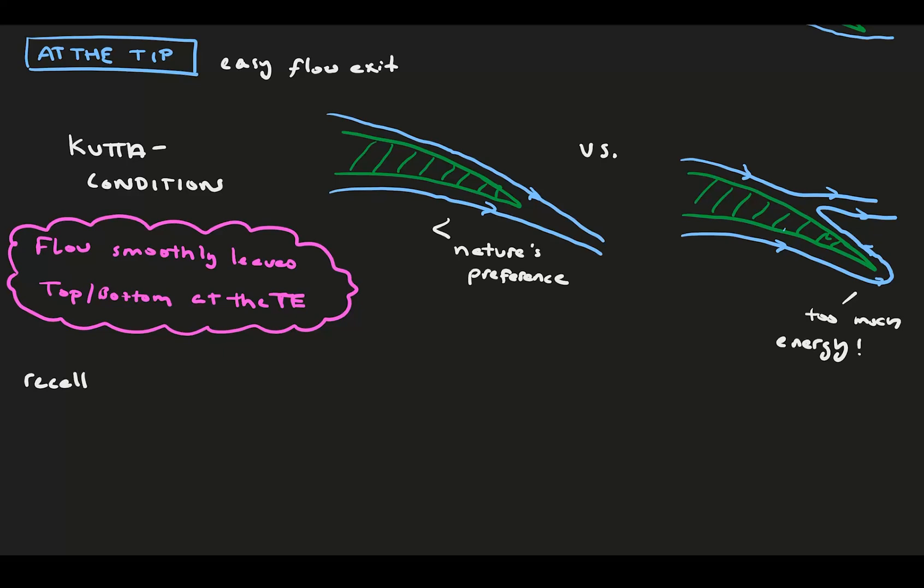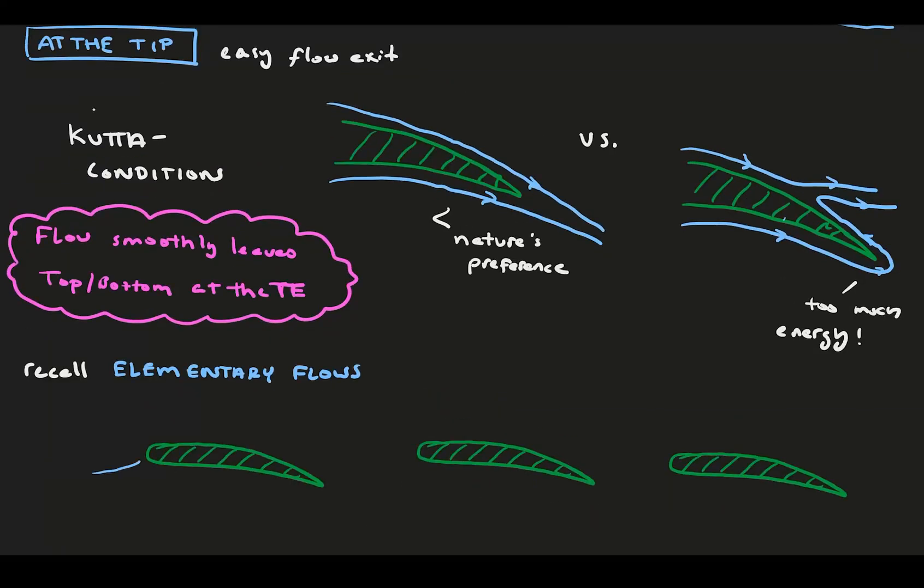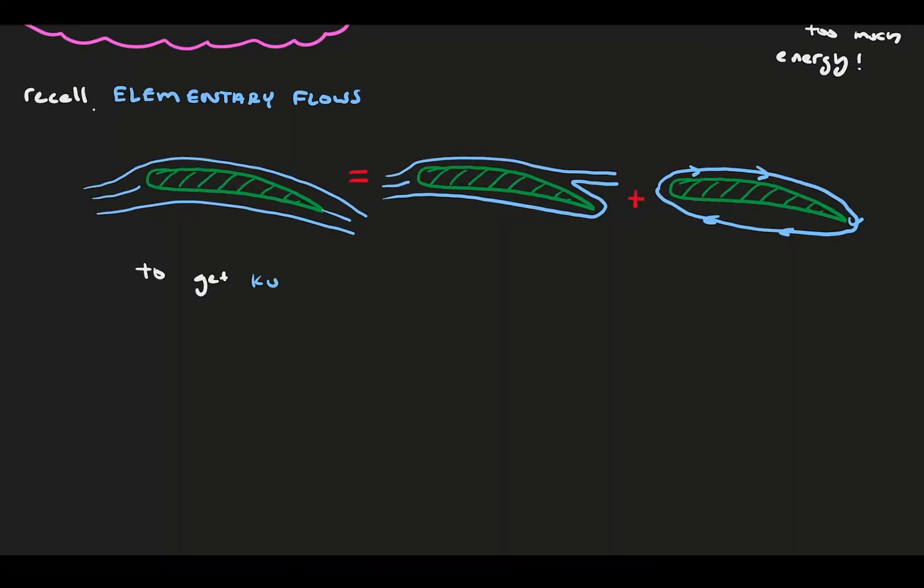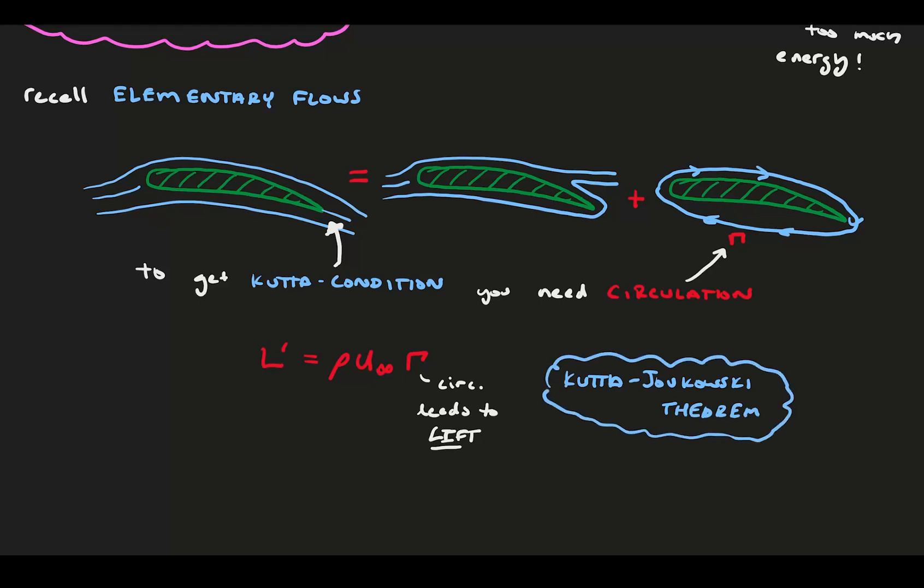You might recall from elementary flows that the flow over an airfoil can be recreated with two sub-category flows. The first is a uniform flow passing by the foil and exiting unturned in an unphysical way. The second is circular rotation around the foil. If you combine these two flows together, you get the true behavior over an airfoil. It's the rotation portion of this addition of elementary flows that indicates lift, because circulation is directly related to the lift through the Kutta-Joukowsky theorem. So, the Kutta condition is partially responsible for the lift production.